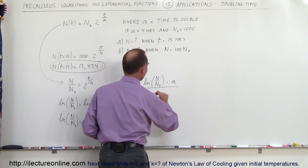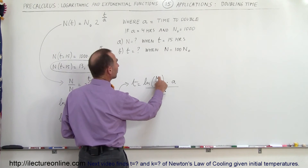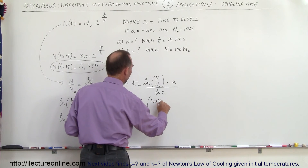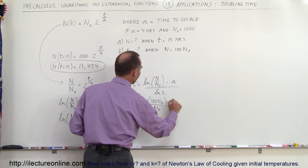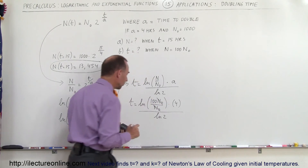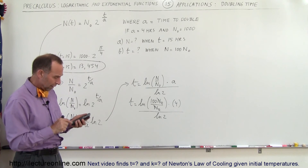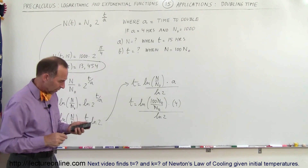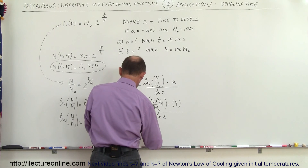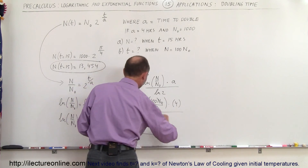Now we're ready to plug in some numbers. Remember that n was supposed to be 100 times n sub naught. So t is equal to the natural log of 100 times n sub naught divided by n sub naught, times a — which is equal to 4 — divided by the natural log of 2. The n sub naughts cancel out, so that's the natural log of 100, times 4, divided by the natural log of 2. That means the time needed to reach a hundred thousand is 26.6 hours.